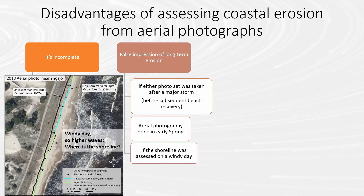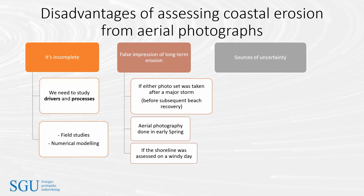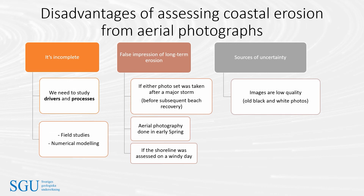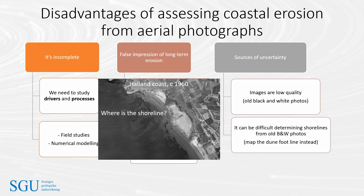A misleading impression of erosion may also occur if the aerial photography for the comparison year was completed on a windy day, because resulting waves push the water level higher, giving a false impression of erosion mapped from the water line. This issue is visible in the 2018 aerial photos shown here. However, it can be avoided by mapping the dune foot line. Precision and accuracy can also be poor if images are of low quality — for example, it can be difficult to determine where the shoreline is on old black and white photographs. This issue can again be avoided by mapping the dune foot line.